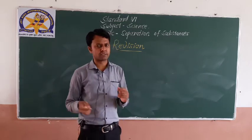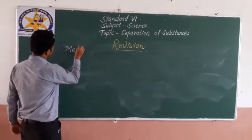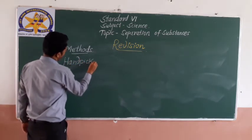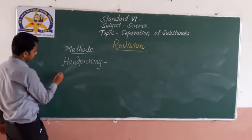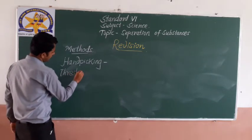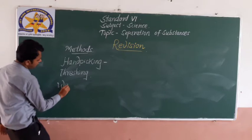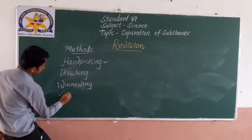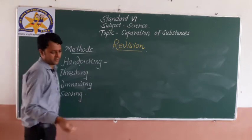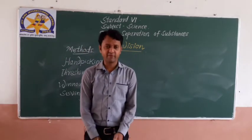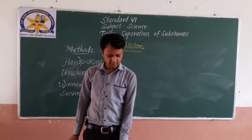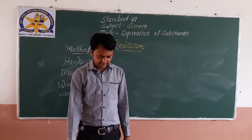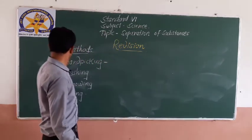Now let us see, as a revision, the different methods of separation. In methods of separation we saw: handpicking, then threshing, then winnowing, then sieving. These are the methods we have seen when we started the lesson.